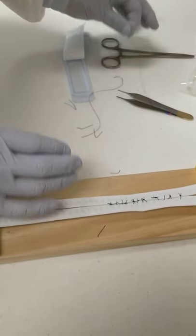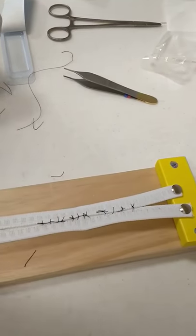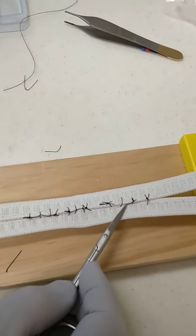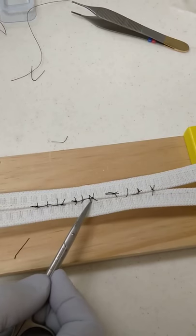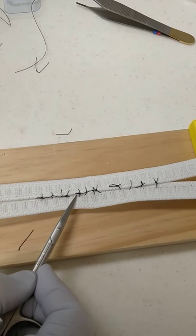So there you have three types of continuous sutures: a baseball suture, a continuous locking suture, and a continuous unlocked suture.